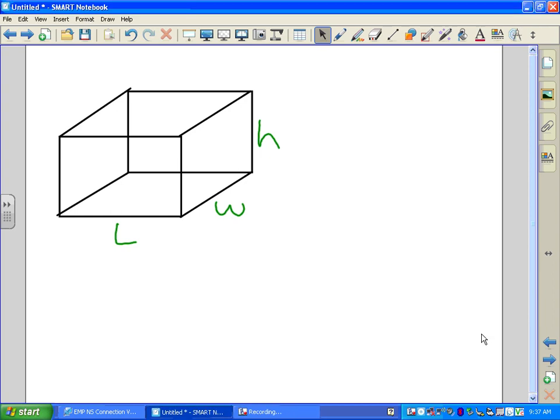Today we are teaching you how to find the surface area of a rectangular prism. The equation to find the surface area of a rectangular prism is length times width plus width times height plus length times height.